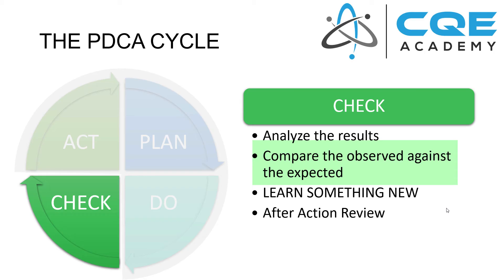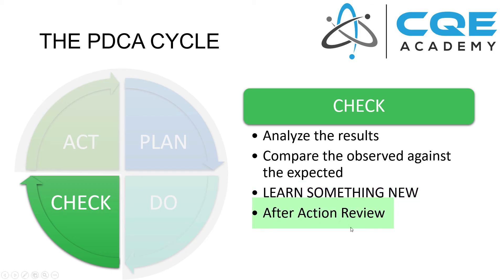Then we want to compare the observed against the expected. Back in the planning phase when we create a hypothesis, we should talk about what we think the expected outcome is. If our observed results match the expected results, we may be confirming the root cause we're testing. But if the observed results are different, it's time to have a conversation about why, so we can learn something new. This check phase is really when we're supposed to learn something new about our process so we can make improvements. At the conclusion of experiments, we also want to do an after-action review — talking about things that went well and things that didn't go well — to make a better, more mature experiment next time.